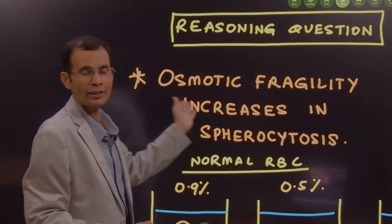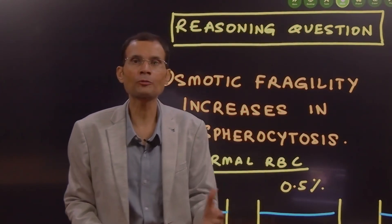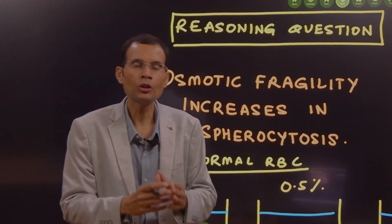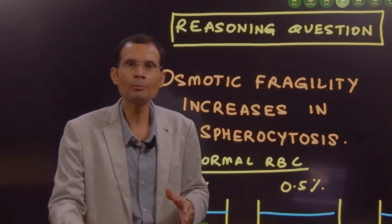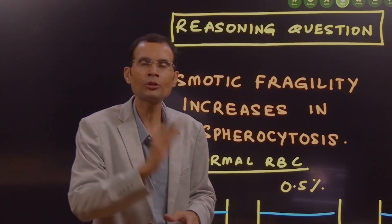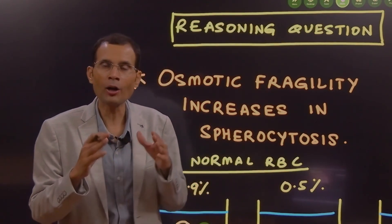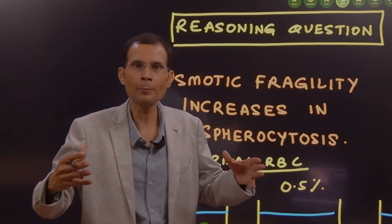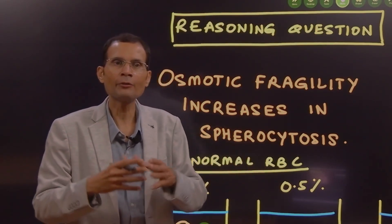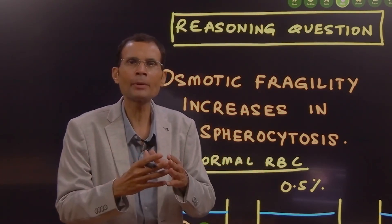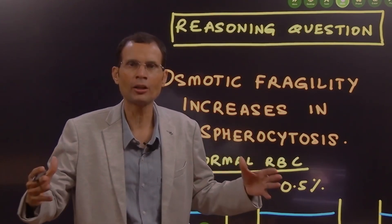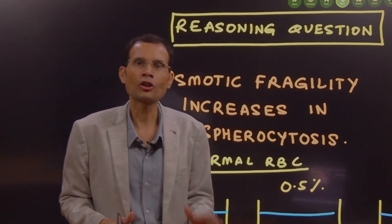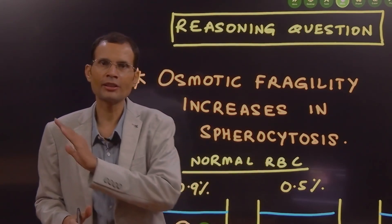Then the word added is osmotic fragility. So, if water moves into the RBC by osmosis, the RBC will swell up and eventually its membrane will be broken down. That concept is called osmotic fragility.